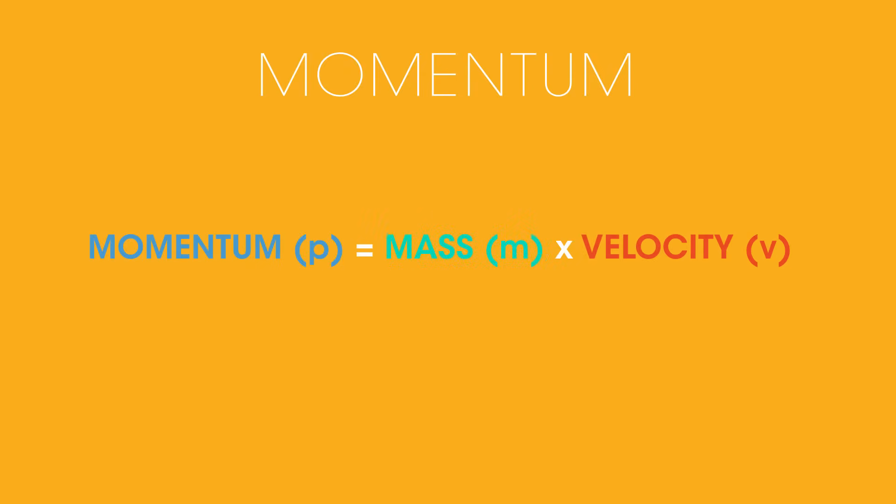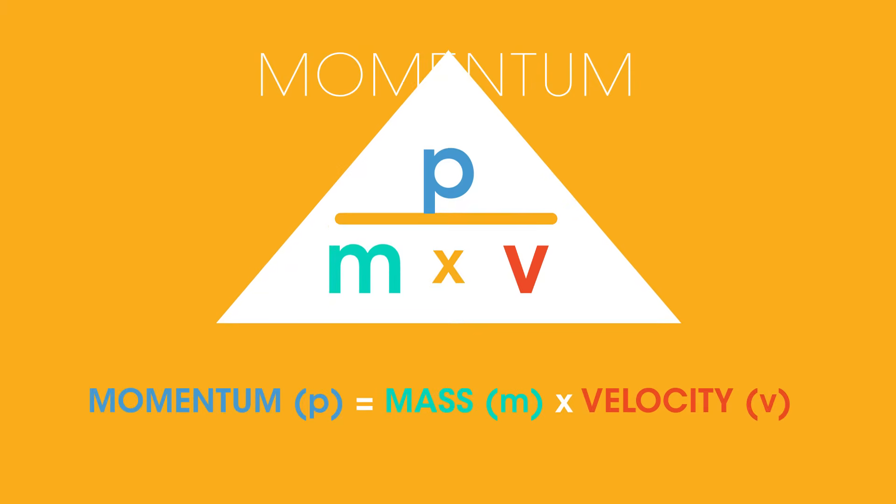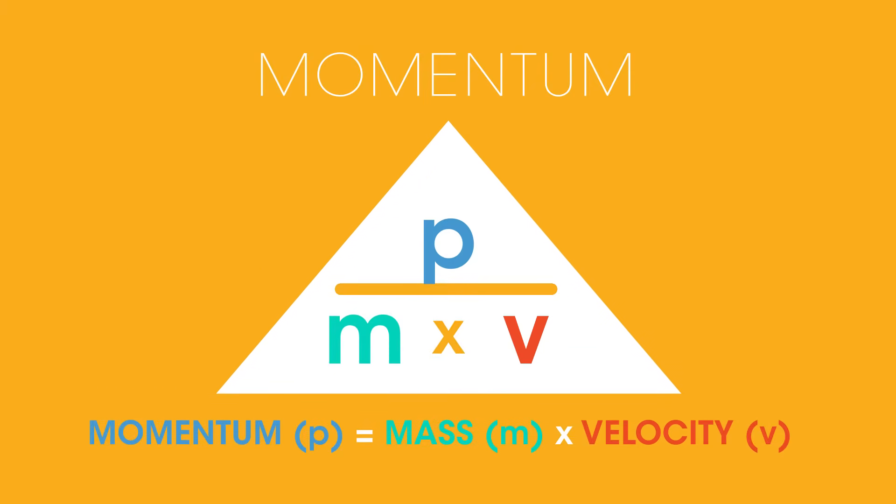We calculate momentum using this equation. Momentum p equals mass m times velocity v. This can also be displayed in a formula triangle like this. So mass equals momentum over velocity, and velocity equals momentum over mass.